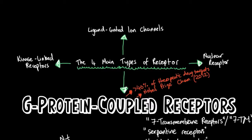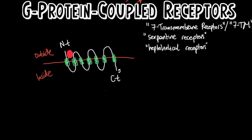What happens to the GPCR when a ligand binds to it? Like the rest of the main types of receptors, GPCRs also undergo a conformational change. This conformational change allows for the signal to be passed on to the next molecule in the pathway for signal transduction. This molecule is a protein — and you probably guessed that this protein is a G-protein. I want to stress the fact that this conformational change of the GPCR doesn't just allow for the activation of one G-protein; it allows for the activation of many, many G-proteins.